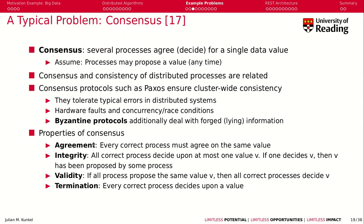When we achieve consensus, there are certain properties involved. First, every correct process must agree on the same value. Second, integrity: all correct processes decide upon at most one value V, and if V has been decided, then someone must have proposed that value. You can't decide on a value that was never proposed, and you can't have two different values. The decision must be valid.